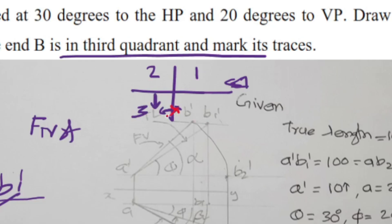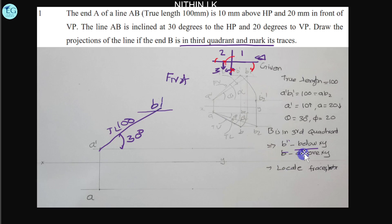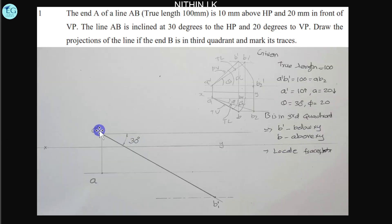The top view is in this plane. We rotate the top view to get the front view. The first quadrant is just opposite to the third quadrant. B1-dash is below the XY line, at 30 degrees with XY. We proceed in this direction along the horizontal line to locate the 100mm true length position.